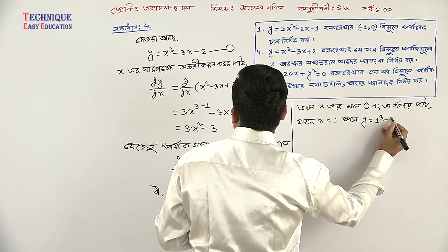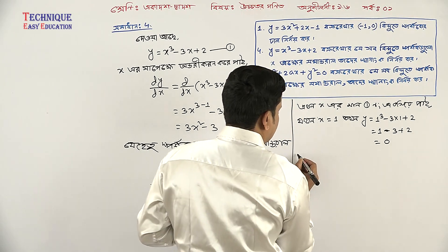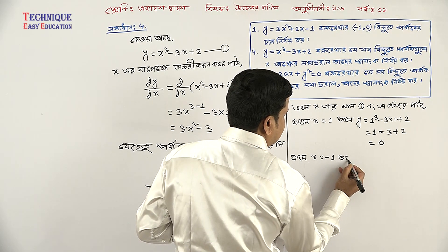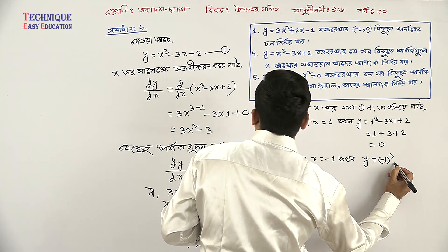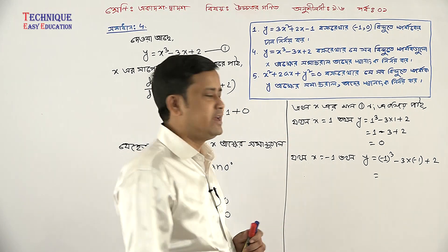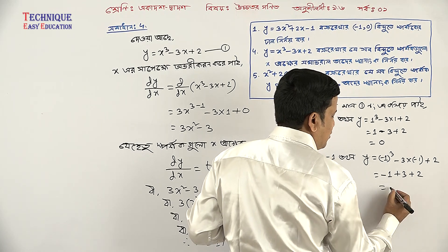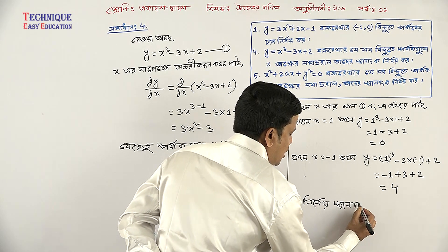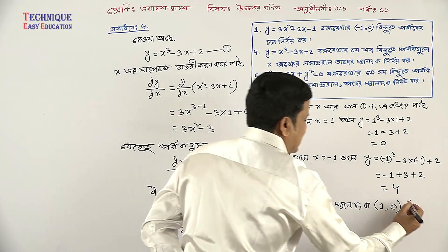1 minus 3 plus 2 equal to 0. So when x equals minus 1, then y equals minus 1 cubed minus 3 into minus 1 plus 2. Minus 1 cubed gives minus 1, and minus times minus 3 gives plus 3, plus 2. The answer is 4. So the answer is 1. So the answer is 0. And the answer is minus 1.